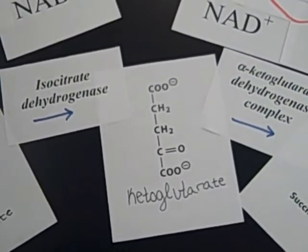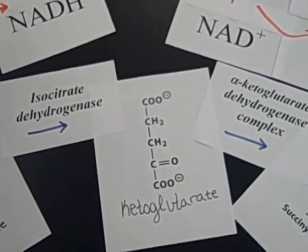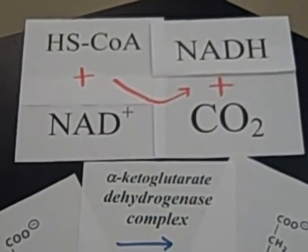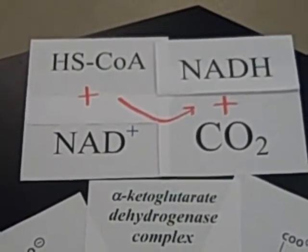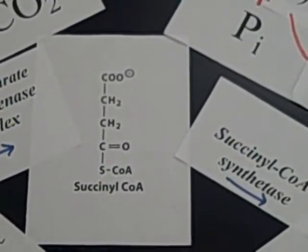To change the α-ketoglutarate into succinyl-CoA, you add the enzyme α-ketoglutarate dehydrogenase. To do this reaction, you must put in one CoA and one NAD+ to produce CO2 and NADH as byproducts.